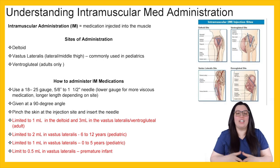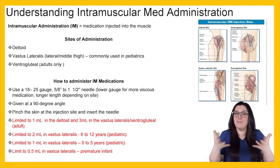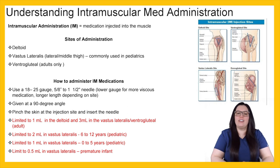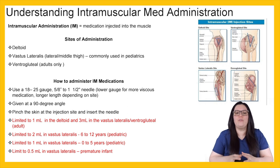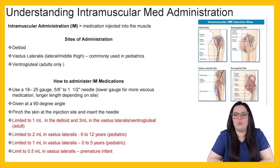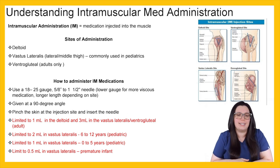Next, let's move on to intramuscular administration, also known as IM. This means that we are injecting medication into a muscle. Sites of administration can include the deltoid muscle, the vastus lateralis — which is the lateral middle part of the thigh, most commonly used with pediatric patients — as well as the ventrogluteal, which is most commonly used with adults. The dorsogluteal site, which is in the back or the buttocks, is now contraindicated, so it's not something you're going to see in practice.